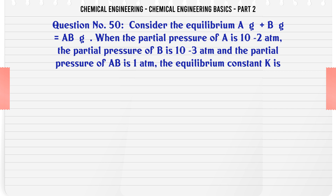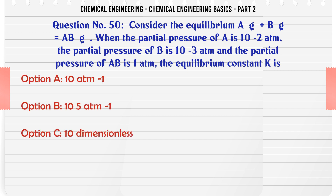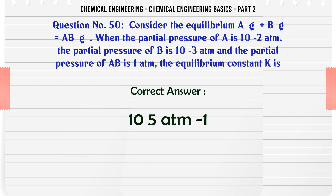Consider the equilibrium: A(g) + B(g) ⇌ AB(g). When the partial pressure of A is 10⁻² atm, the partial pressure of B is 10⁻³ atm, and the partial pressure of AB is 1 atm, the equilibrium constant K is: a) 10 atm⁻¹, b) 10⁵ atm⁻¹, c) 10 (dimensionless), d) 10⁵ (dimensionless). The correct answer is: 10⁵ atm⁻¹.